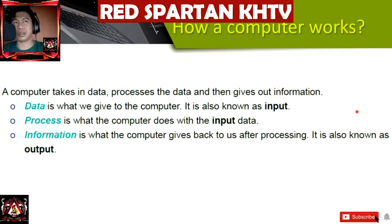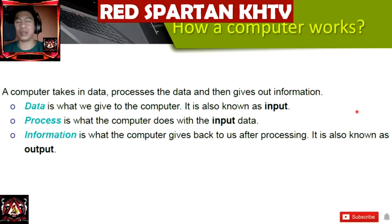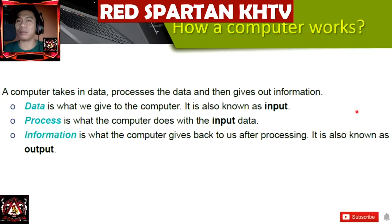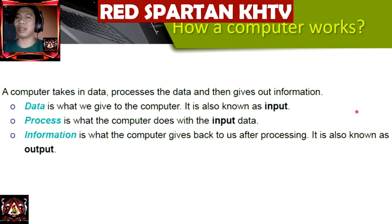So how does a computer work? A computer takes in data, then processes the data, and then gives out information. Data is what we give to the computer — when we type something, that is data, also known as the input. Process is what the computer does with the input data. Information is what the computer gives back to us after processing, and it is also known as the output.